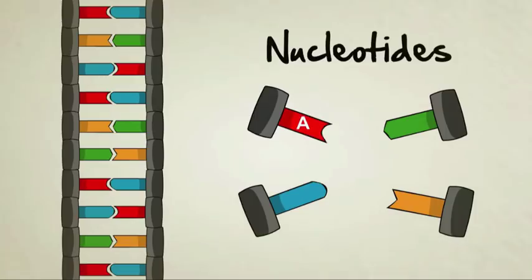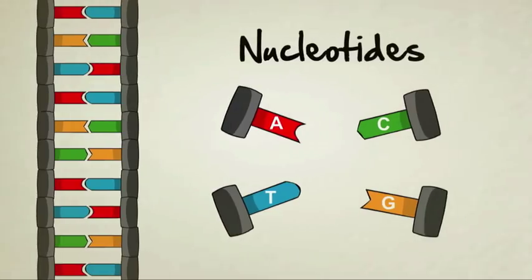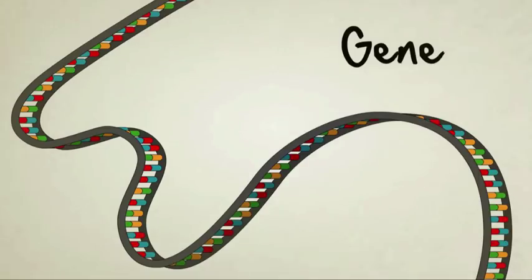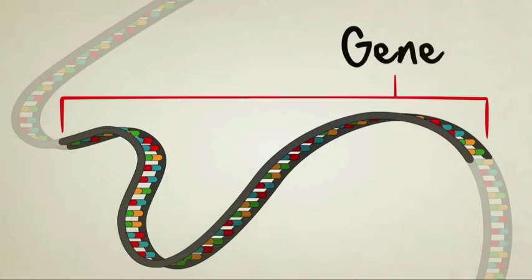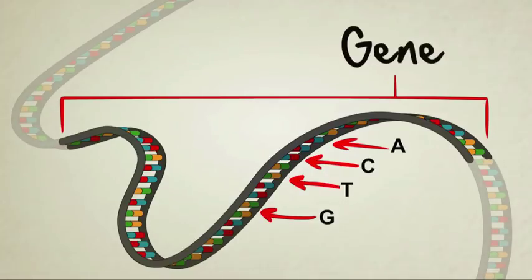Scientists have labeled them A, C, T, and G. A gene is a special stretch of DNA, a sequence of A's, C's, T's, and G's that code for something.